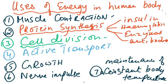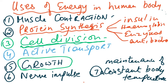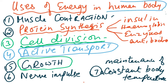Active transport takes place extensively in the intestines and villi. The syllabus specifies the human body, so do not use the example of root hair cells. Neurons also require active transport for nerve impulses. Growth — the increase in cell numbers — is another use of energy. Additionally, maintaining a constant body temperature of 37 degrees Celsius requires energy, as the body needs a mechanism to maintain this temperature, much like a Bunsen burner maintains water temperature.